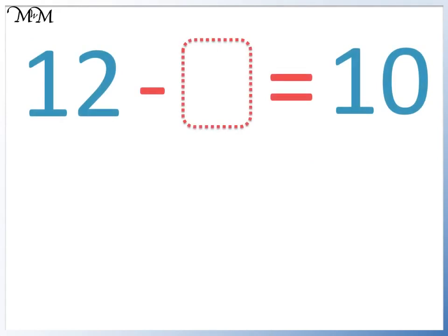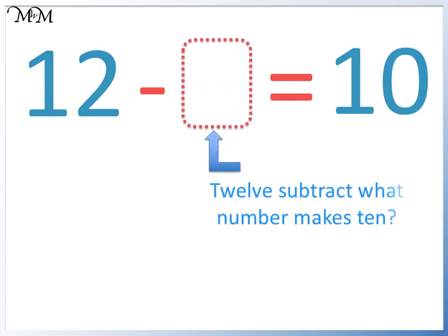To find this missing number, we think 12 subtract what number makes 10. We start at 12 and count down. So starting from 12, we have 11, 10. We have subtracted 2.